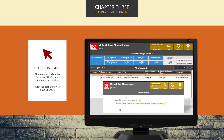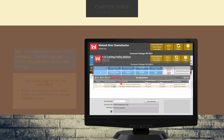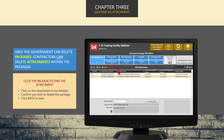To edit an attachment, the user can update the document title or the attachment description. Just remember to click the Back button to save all changes. Only the government can delete packages. However, the contractor can delete attachments within the package. Just click the attachment you'd like to delete, confirm you want to delete the package, and click Back to commit.